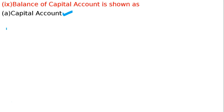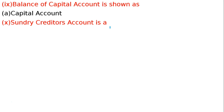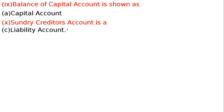9th and 10th questions: Sundry creditor account kaunsa account hai? From 4 alternatives, sundry creditor account is a liability account. Creditor ka matlab hai udhaari — jisse hum udhar par goods lete hain, woh hamara creditor hota hai. If we bought machinery on credit, the supplier is a creditor for asset, not a sundry creditor. Jo hamare trading goods — jaise iron ore — supply karta hai, woh hota hai sundry creditor. There are also creditors for expenses.